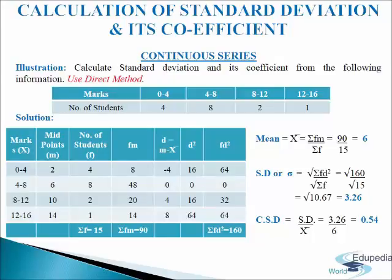In the last column we will write fd squared. We will multiply frequency with d squared: 4 into 16 is 64, 8 into 0 is 0, 2 into 16 is 32, 1 into 64 is 64. We will add up the values and get sigma fd squared equals to 160. Now we will calculate SD: the square root of sigma fd squared divided by sigma f equals to 3.26.